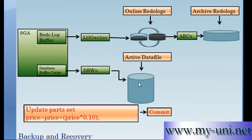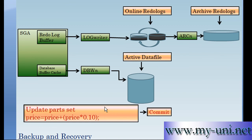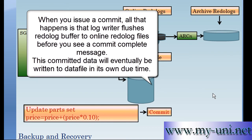In order to update one million records, the database writer might take hours. The log writer simply has to write that statement to the online redo log files — taking fractions of a second instead of hours. So if you lose power while the database writer is in the middle of writing, you still have that statement in the redo logs to rerun. You rerun it, store the data, and make the database writer write it back to the data file. That is known as recovery.